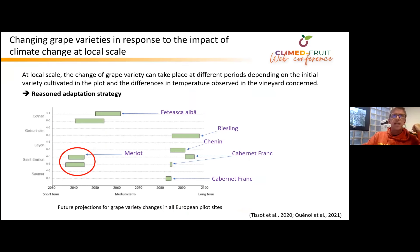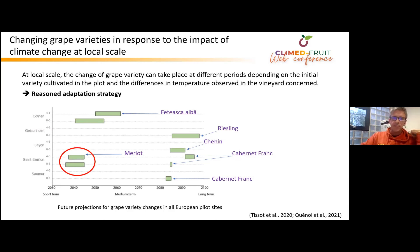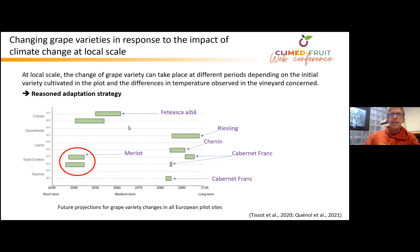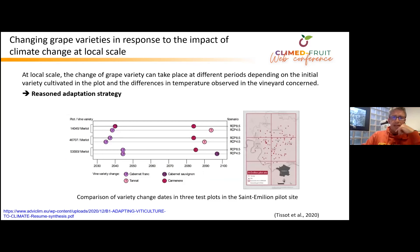Another example concerning the changing of grape varieties. Here you can see the projected change in varieties in each wine-growing region of the project according to the RCP 4.5 and RCP 8.5 scenarios. For example, at a regional scale, the results show that temperature conditions will no longer be favorable for Merlot in Saint-Emilion around 2040.